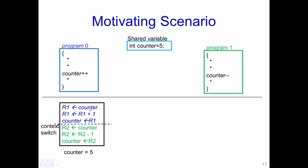First, the value of counter stored in memory is loaded into a register, say R1. Then R1 is incremented by 1: R1 = R1 + 1. Then R1 is written back into the memory location of counter. In terms of numbers: counter holds 5, which is loaded into R1; R1 becomes 6; and that value of 6 is written back into the memory location of counter.